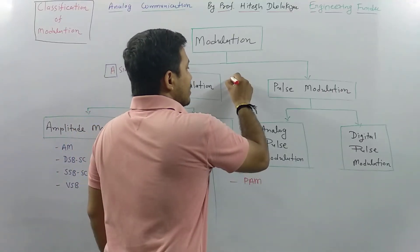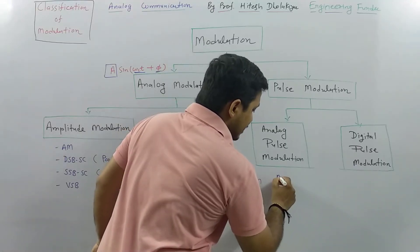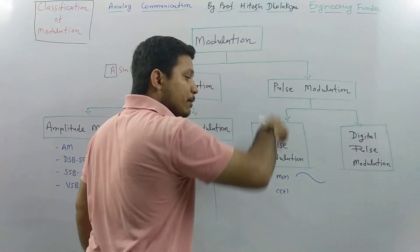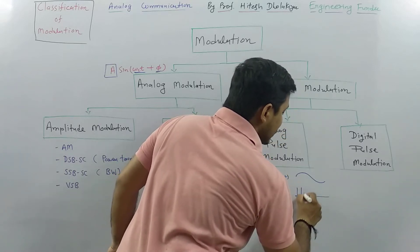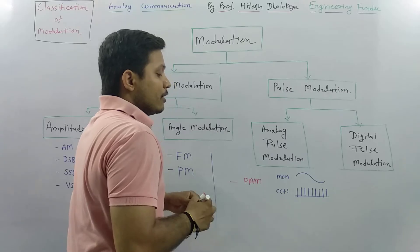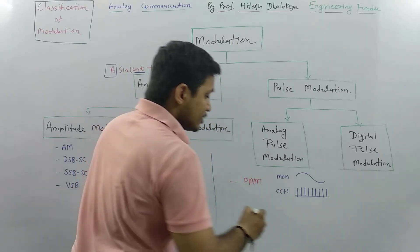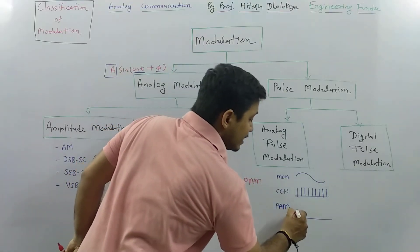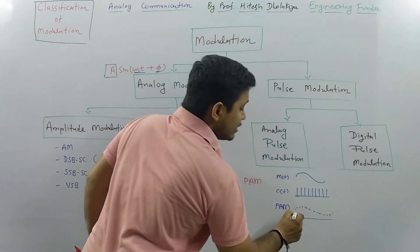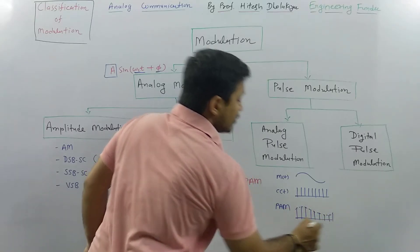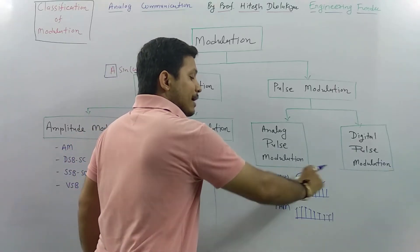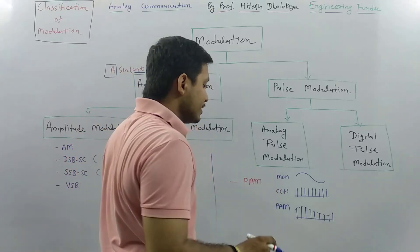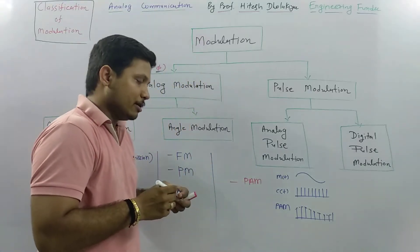For example, if the modulating signal m(t) has a certain waveform, and the carrier signal is in terms of pulses, then in pulse amplitude modulation the amplitude of the carrier pulses changes with respect to the modulating signal. So the amplitude of the carrier pulses varies according to m(t) in pulse amplitude modulation.